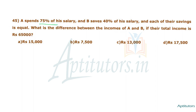A spends 75% of his salary and B saves 40% of his salary, and each of their savings is equal. What is the difference between the incomes of A and B if their total income is 65,000 rupees?